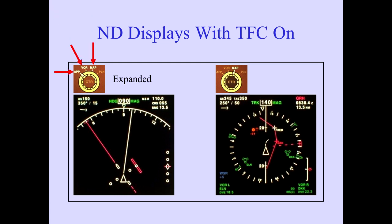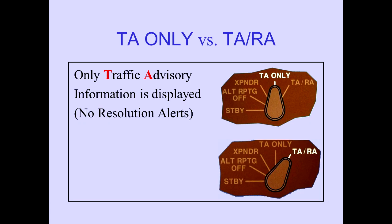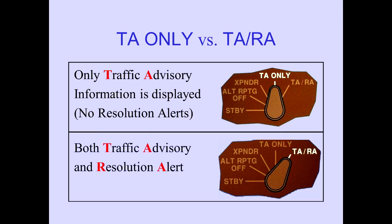The centered mode only provides data when MAP is selected. Two positions of the transponder mode selector, TA only and TA RA, provide inputs to the TCAS computer for processing and display. When TA is selected, only TA information is displayed. Selecting TA RA provides both advisories for display and enunciation.